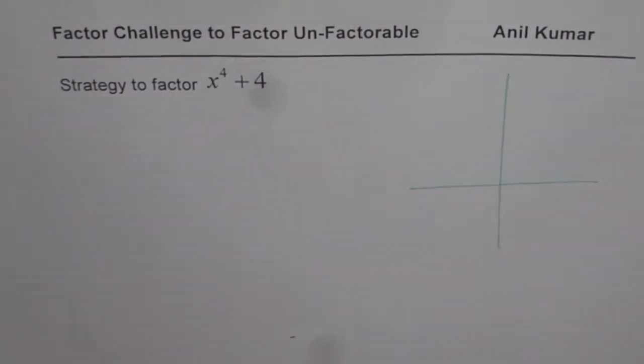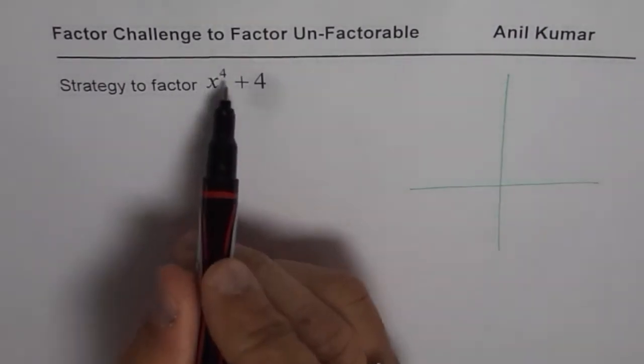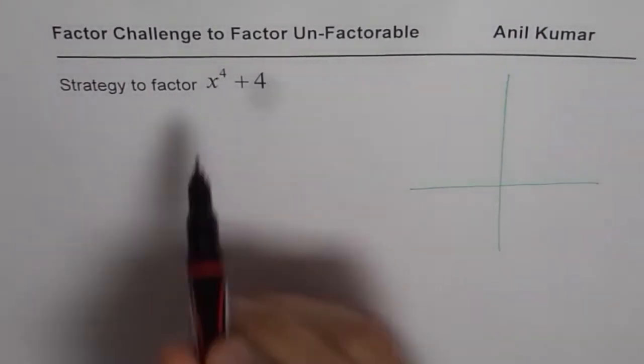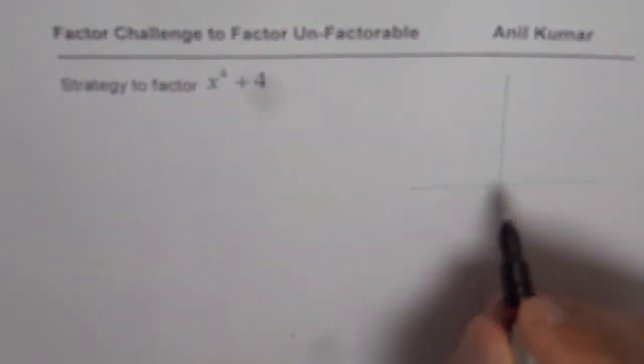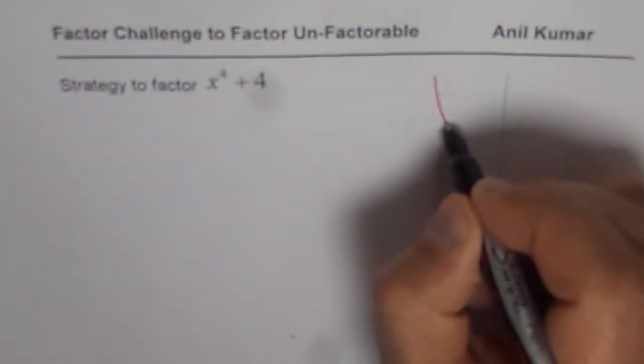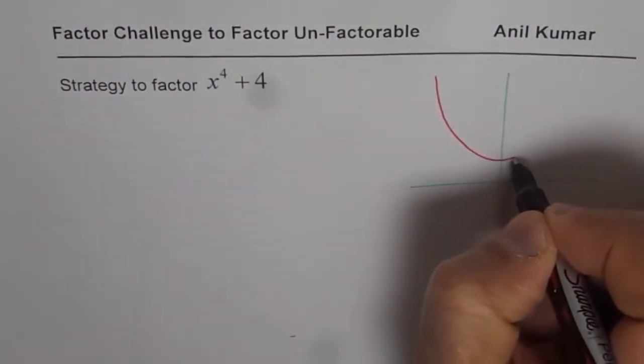I'll explain it graphically. If you try to sketch the graph of x to the power of 4 plus 4, x to the power of 4 is like a parabola but flatter here and plus 4 means translated 4 units up. So it will look something like this.